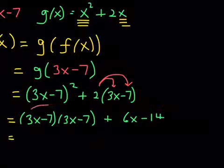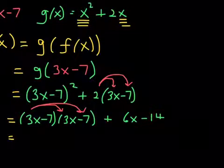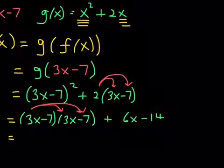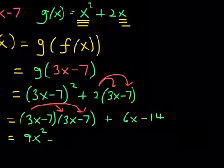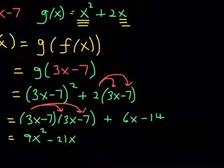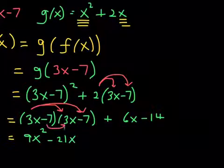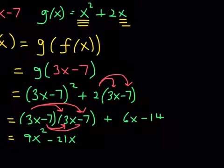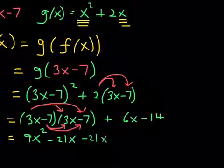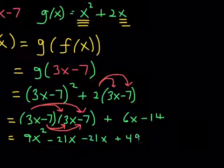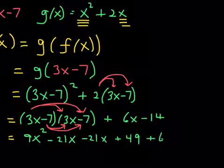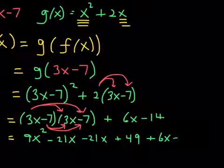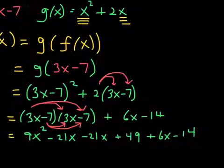Over here, we're going to, a lot of you know the acronym FOIL, which just means you need to distribute. So we're going to distribute 3x to 3x and negative 7. So 3x times 3x is 9x squared. 3x times negative 7 is minus 21x. And we have to continue our distributing. So negative 7 times 3x and then negative 7 times negative 7. Negative 7 times 3x is negative 21x again, and then negative 7 times negative 7 is positive 49. Let's not forget to bring down the 6x minus 14. Very good.